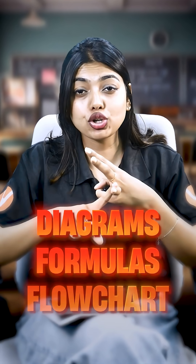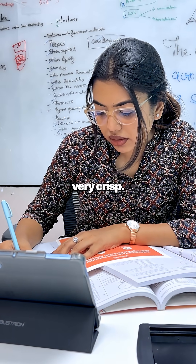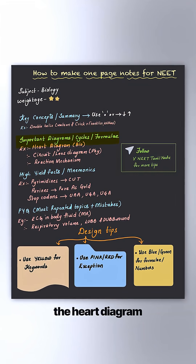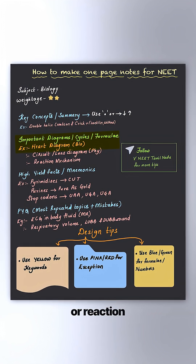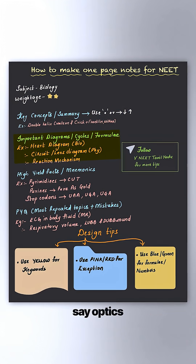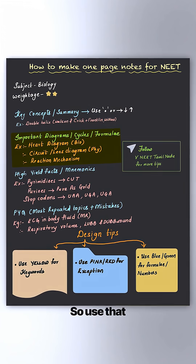Second thing: diagrams, formulas, and flowcharts — all of this has to be written in your short notes. Do not write elaborately but make it very crisp. This way, whenever you look at it, you will revise it very quickly. For example, when writing the heart diagram, reaction mechanisms, or optics, chapters with a lot of diagrams — use them.